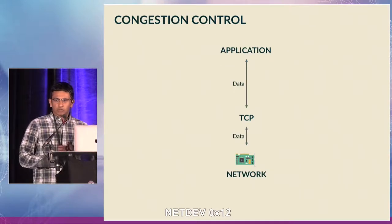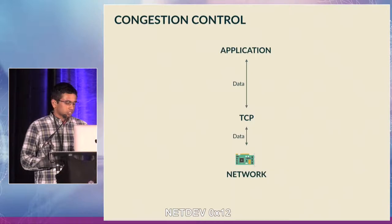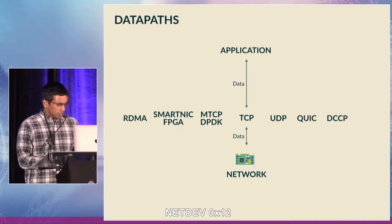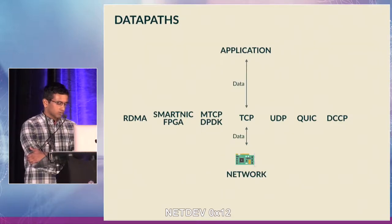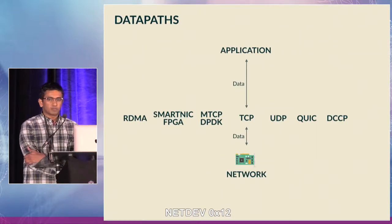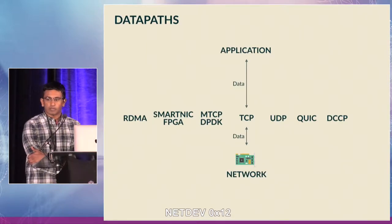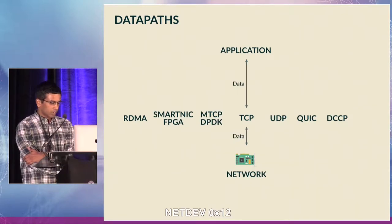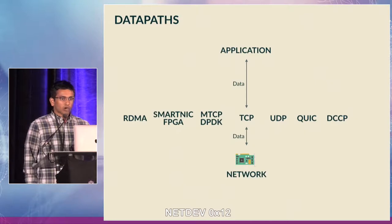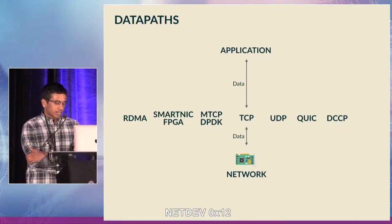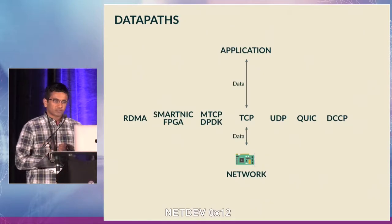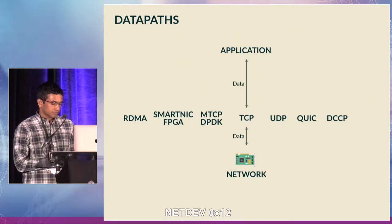However, this architecture, where you tie congestion control to the datapath, has three major shortcomings. First, TCP is no longer the only datapath — by which I mean the network API by which the application sends data to the network. I'm not just referencing software datapaths like QUIC, but also new hardware-accelerated datapaths created to aid CPUs in sending packets onto the wire as network line rates have scaled.